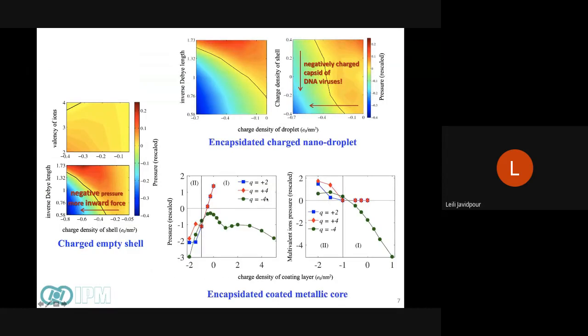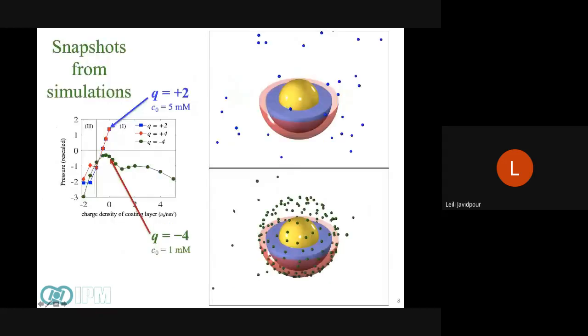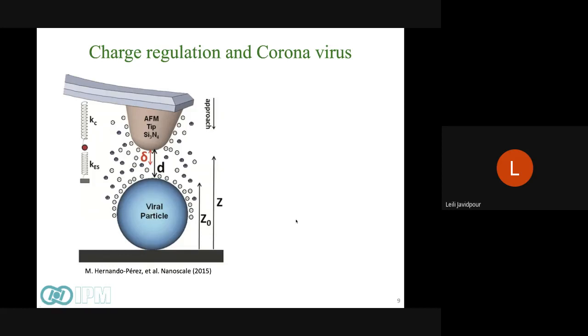And here, counter ions are negatively charged. If we have multivalent counter ions, we could see even attraction between positive R2 and positive R1. And the reason is as I answered to the question of Ali. So this is a strategy that we could use to stabilize any kind of coating layer for the gold nanoparticle.